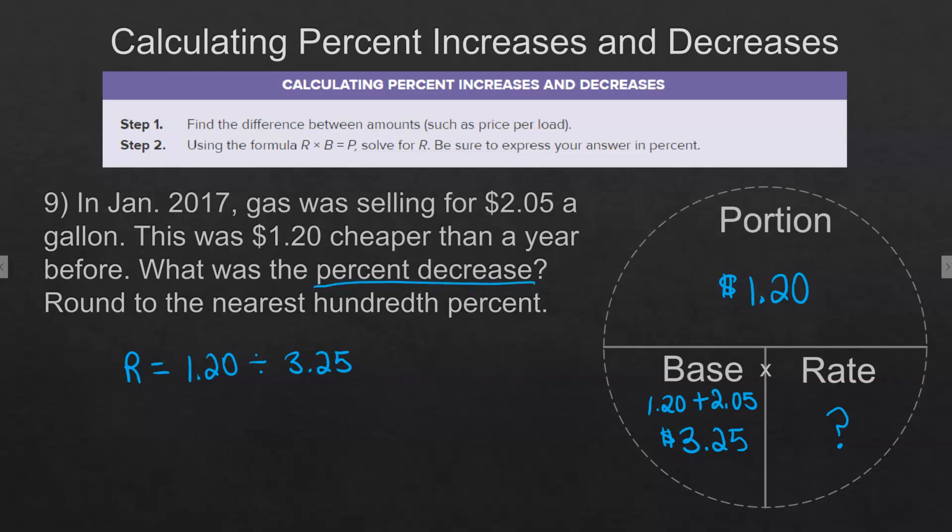When we divide, we get 0.36923 and we're rounding to the nearest hundredth percent. Remember, you change it to a percent first. And then you can see that we can drop the three because we're going to the hundredths place on the percent.